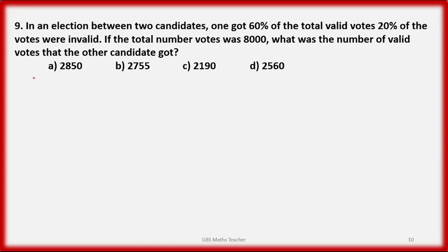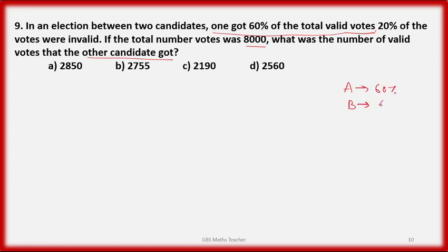Question 9: in an election between two candidates, one got 60% of total valid votes, and 20% of the boards were invalid. If the total number of votes was 8,000, what was the number of valid votes the other candidate got? So the other candidate got 40% of valid votes.